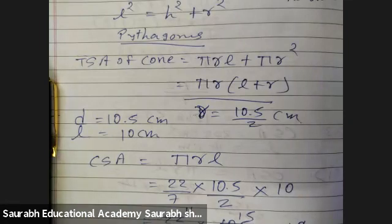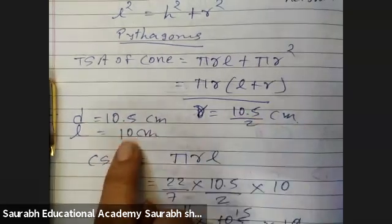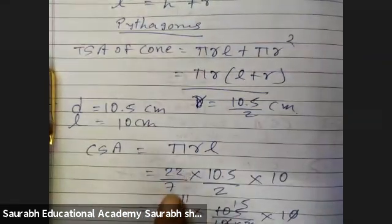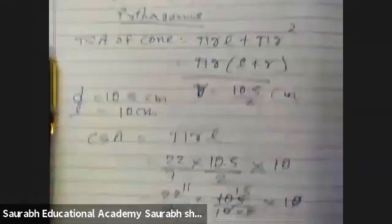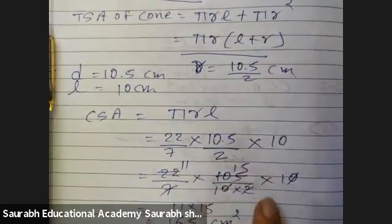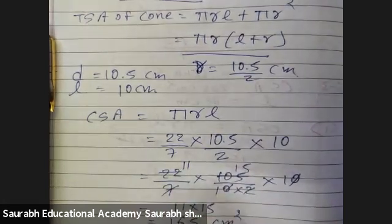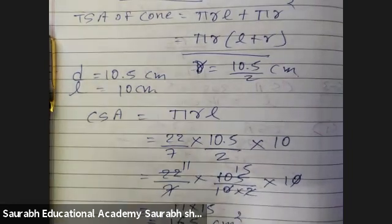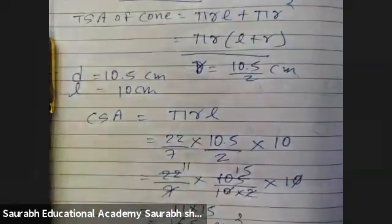Question 13.3, first question. Diameter of base of cone is 10.5 and slant height is 10. Curved surface area equals π R L. Value of π is 22 by 7, radius is 10.5 by 2, and L is 10. Simplifying: 10 and 10 cancel, then 7 and 2 cancel to give 11 into 15, which is 165 centimeter square. That is the curved surface area of this cone.